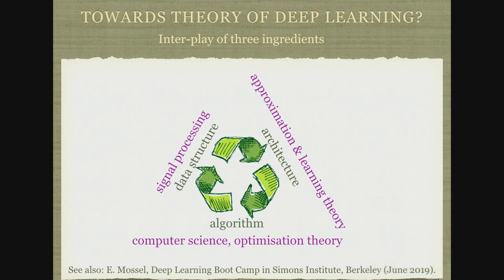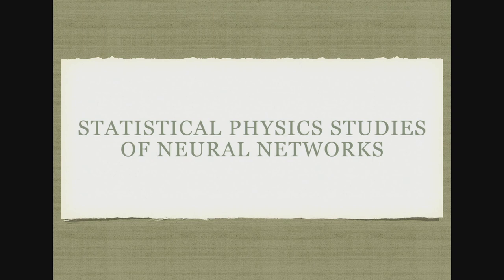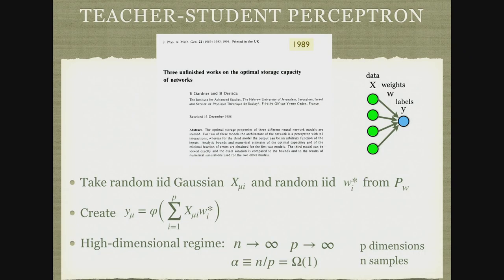I also reference a talk by Elhanan Mosel at a Simons Institute bootcamp who made the same point, and who rated influential deep learning theory papers on how well they account for these three ingredients. Now going to the statistical physics approach — from the very beginning it was taking into account all three, and that's what I'm building on. The most influential early papers, in my view, are works by Gardner and Derrida, notably the teacher-student perceptron, where there is a single-layer neural network with only input and output.